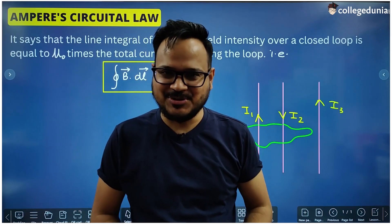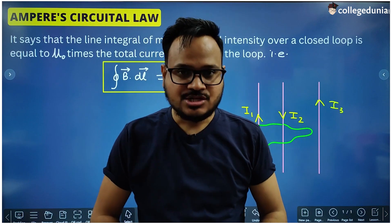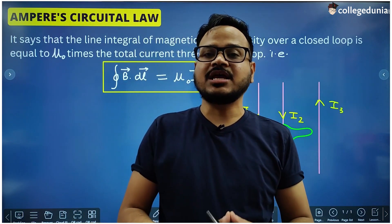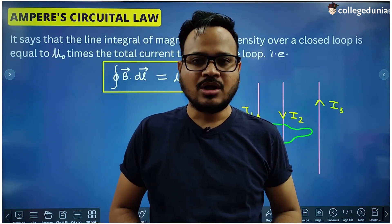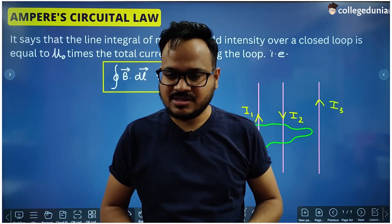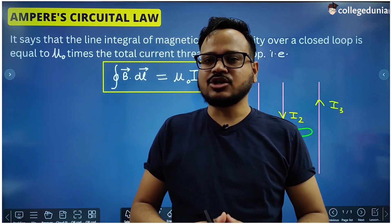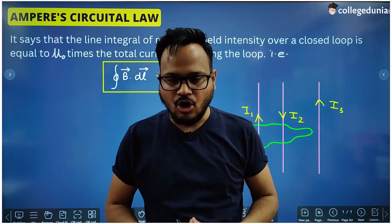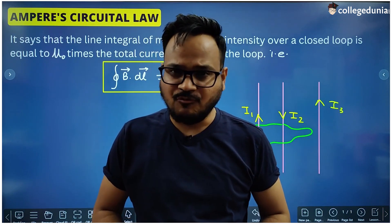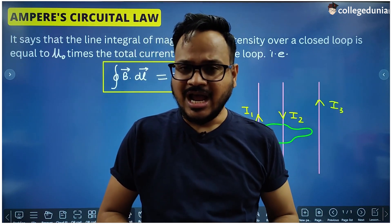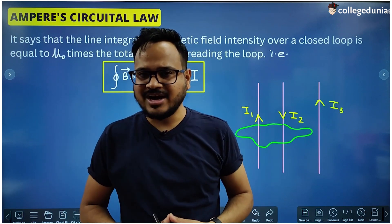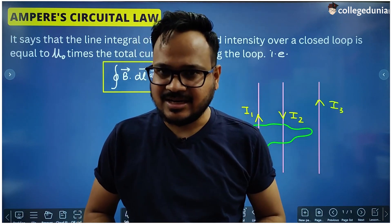Hello students, welcome back to our channel. In this video we are going to study a very important law in unit magnetism from class 12th physics, and this law is Ampere's Circuital Law. This law is used to find the magnitude of magnetic field around a current carrying conductor or a group of current carrying conductors.